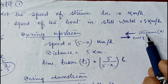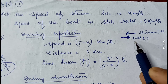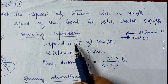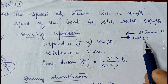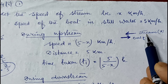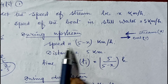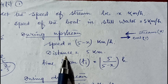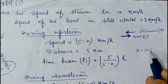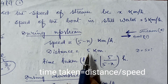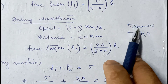During upstream the stream flows in one direction and the boat moves in the opposite direction, so the net speed is 5 minus x. The distance given is 15 kilometer, and since time equals distance divided by speed, the time taken t1 will be 15 divided by (5 minus x) hours. During downstream, the net speed will be x plus 5, so the speed is 5 plus x kilometer per hour.